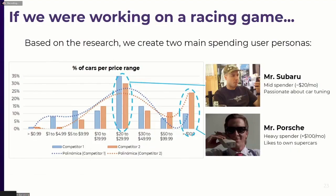If we were working on a racing game, we could generate two main spending personas from this research. One would be 'Mr. Subaru' — a mid-spender who spends about $20 per month and is passionate about car tuning. The other would be 'Mr. Porsche' — a heavy spender who spends $100 per month and likes supercars. We'd complete these personas with more details like how often they play, and use that information to guide the price creation process.